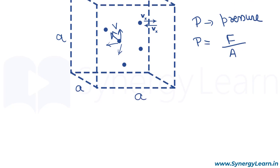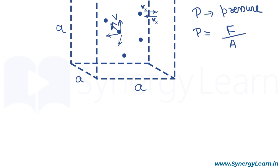Say a molecule hits the wall with velocity vx and rebounds with vx. Then the change in its momentum Δp is minus 2m·vx, because it rebounds with the same speed in an elastic collision.